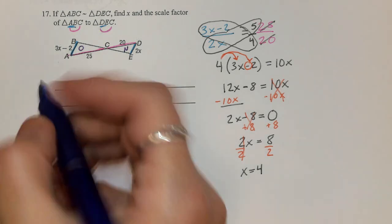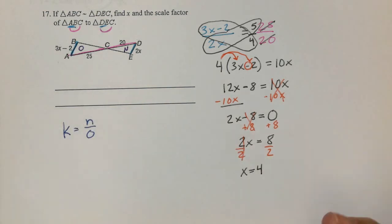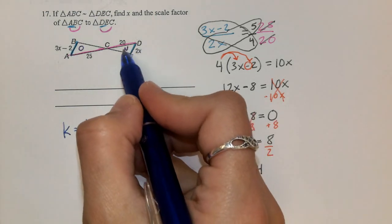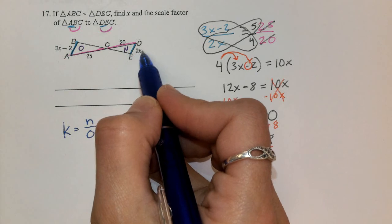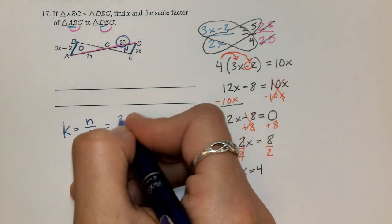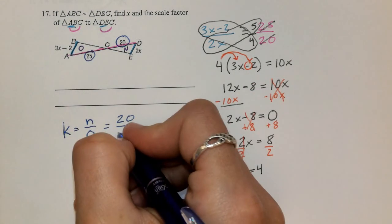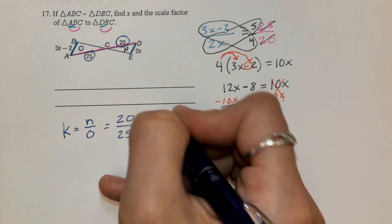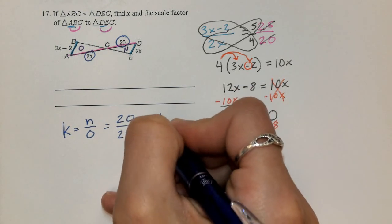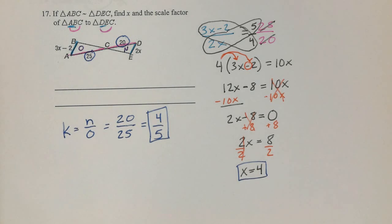Our scale factor, remembering new over original or new over old. So here's our new. So instead of plugging in for X, let's just take that side. We've got our 20 over the corresponding side over here, 25. This will simplify down to 4 fifths as your scale factor. So you'll have 4 as one answer and 4 fifths as the other. Good luck on your test.